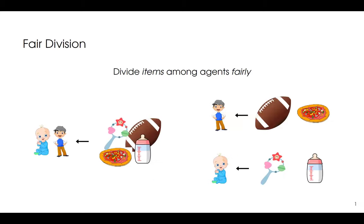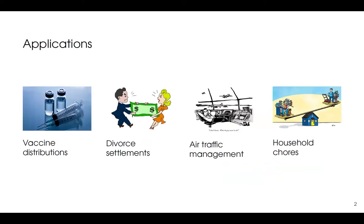So what is fair division? We want to divide items among agents. Like in this example, there are two agents and these are the items. This problem is very ancient — mentions of this problem appear in the Bible and ancient Greek mythology. Dividing resources fairly among agents is a very old problem. It has several applications even now, like vaccine distribution, divorce settlement, air traffic management, and household chores, just to name a few.